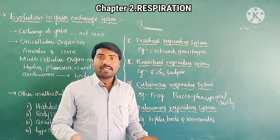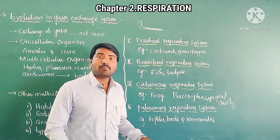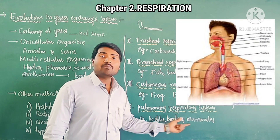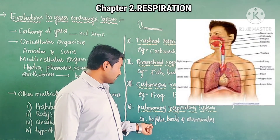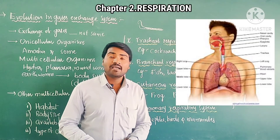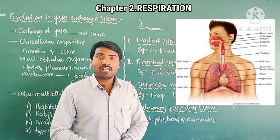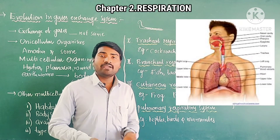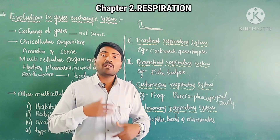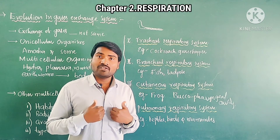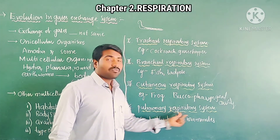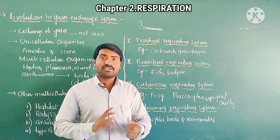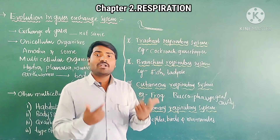Now the last and most highly developed type: the pulmonary respiratory system. If respiration takes place through lungs, it is called pulmonary respiration. We can see this type in reptiles, birds, and mammals. Highly developed organisms respire through lungs. This lesson was about pulmonary respiration and respiration in human beings. In this way, different organisms have developed different systems for gas exchange — this is called the evolution of gas exchange.